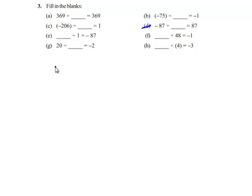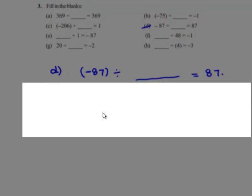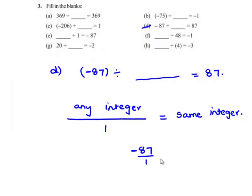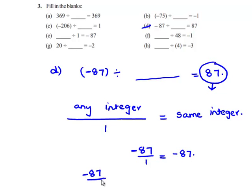We will see the next problem. The question is: negative 87 divided by some integer gives 87. Negative 87 divided by 1 gives negative 87. But we can see that in the answer we have a positive sign. Which implies we have to divide negative 87 with a negative integer, that is negative 1, to obtain positive 87. Therefore, the answer is negative 1.